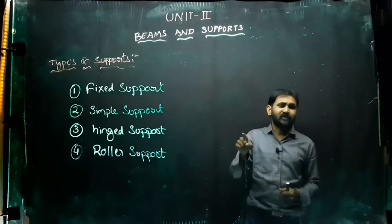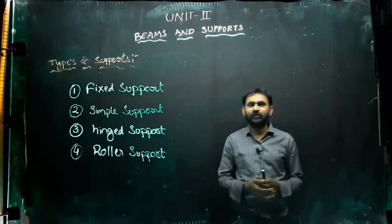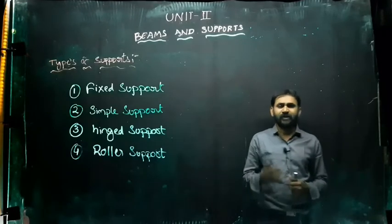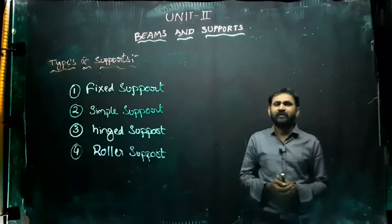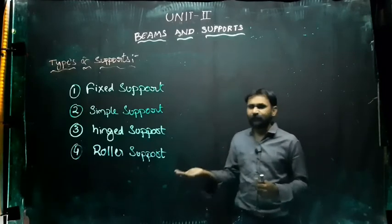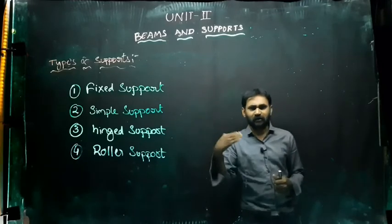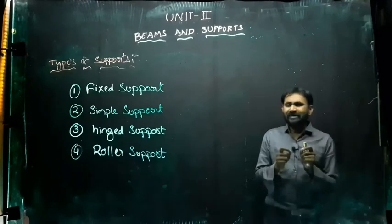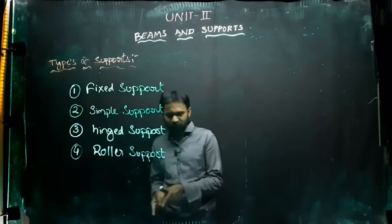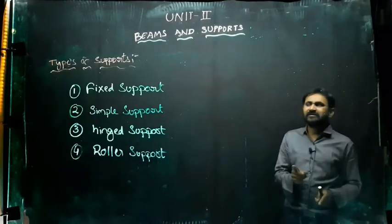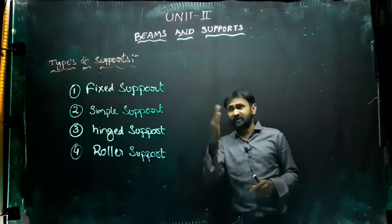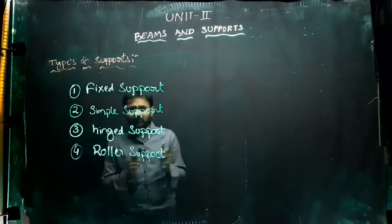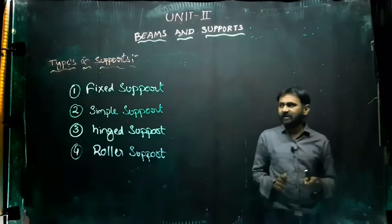Depending upon the condition of the beam, these support types are used. For example, when you travel from one place to another — if it is a walkable distance you walk, if a little far you take a bicycle, further still a scooter or four-wheeler, if too far you take a train, and if out of the country you go by flight. When the distance increases, the mode of transportation increases. Similarly, when the load content of the beam increases, the support type also changes — that may be fixed, simple, hinged, or roller support — depending upon the type and load conditions.